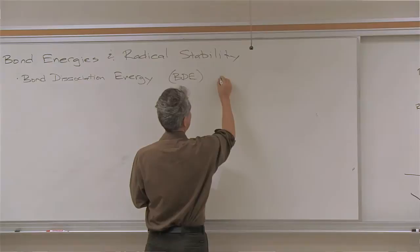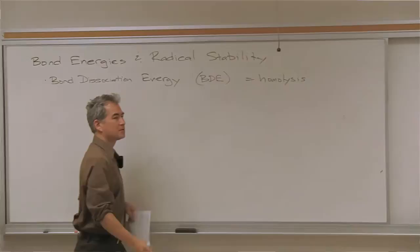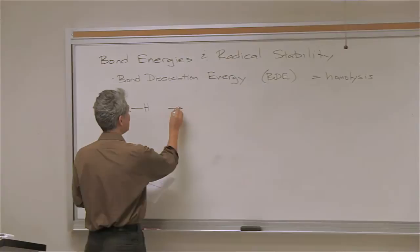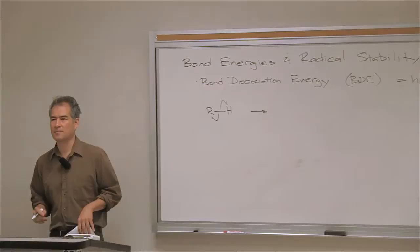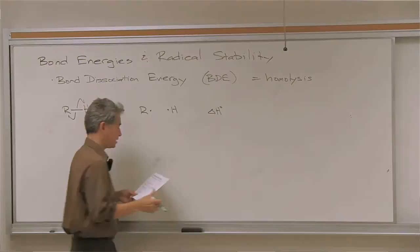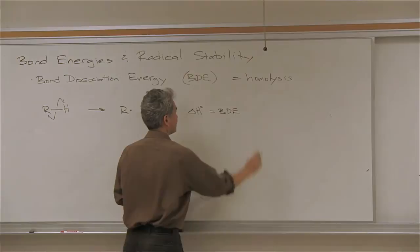There is a process called bond dissociation, and it specifically refers to a homolytic process — homolysis. By definition, if you talk about the bond dissociation energy for an alkyl–H bond — ethyl–H, methyl–H, cyclohexyl–H — the bond dissociation energy is defined as the enthalpy required to homolyze this bond to give two independent radicals. The standard enthalpy change is the bond dissociation energy.